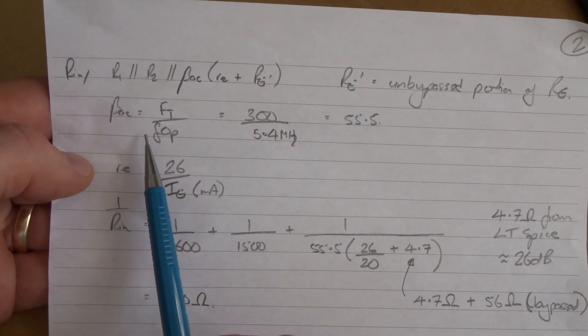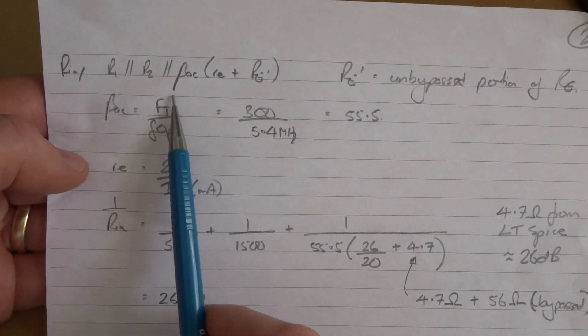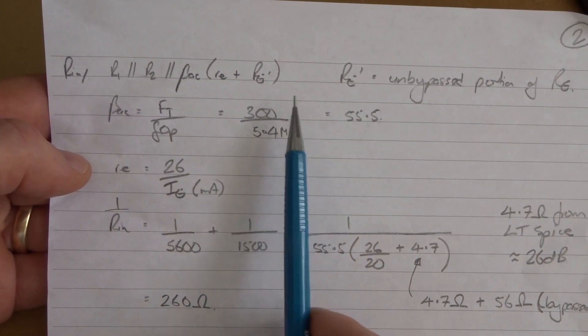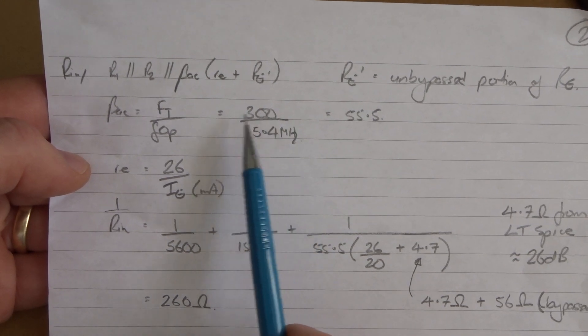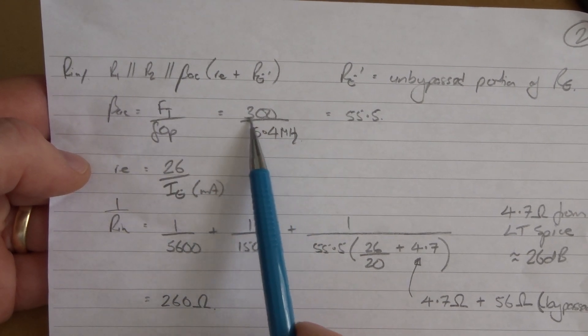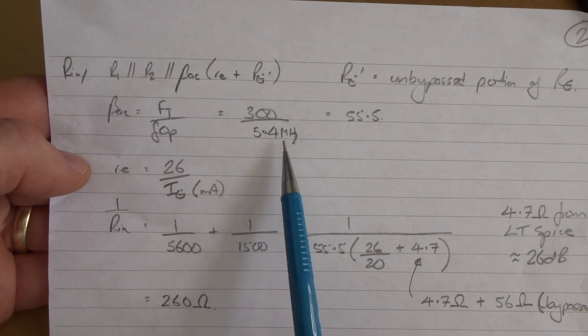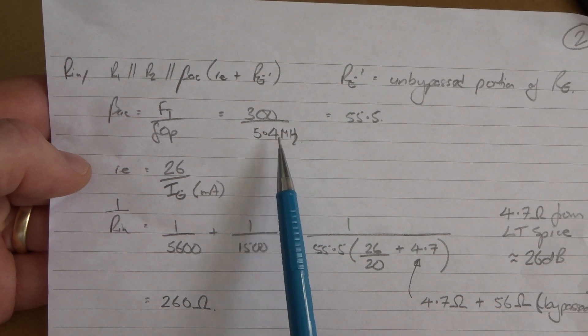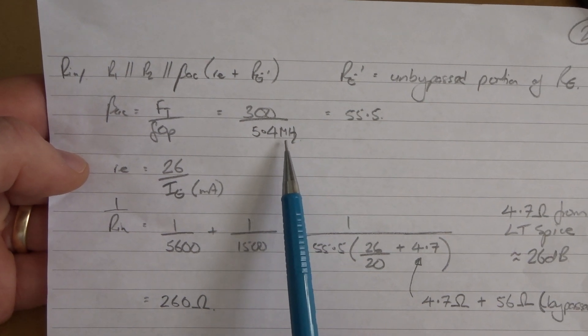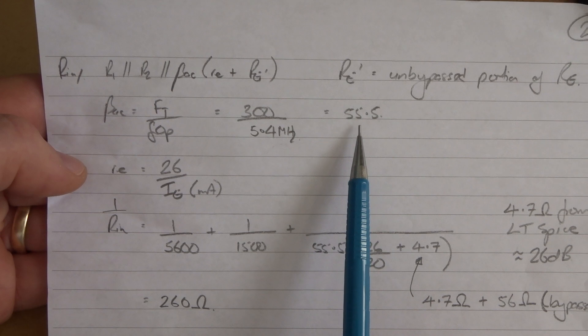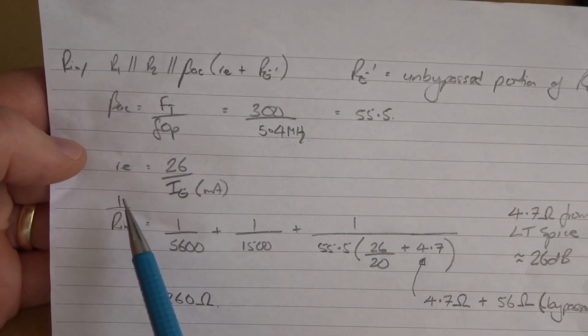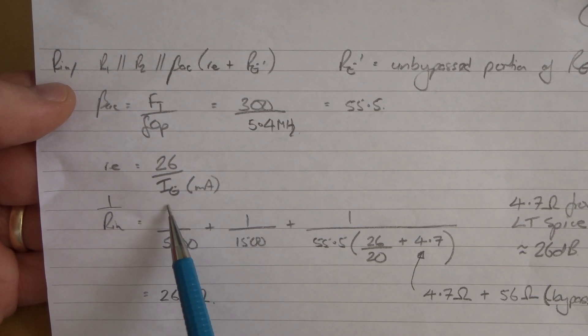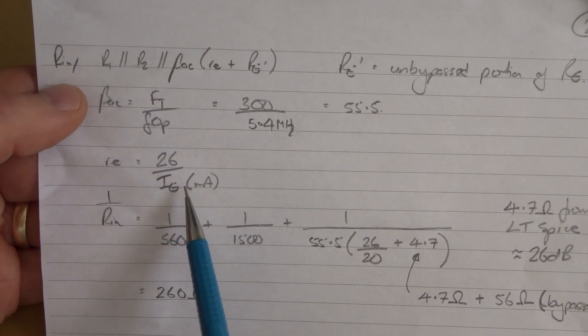We know that R in equals R1 in parallel with R2 in parallel with beta AC times little RE plus RE dash, where RE dash is the unbypassed portion of RE. Beta AC equals our transition frequency for the device divided by our frequency of operation. From the spec sheet, 300 megahertz divided by 5.4 megs - the happy medium between 80 meters and 40 meters - comes out at 55.5. Little RE equals 26 divided by our emitter current in milliamps.